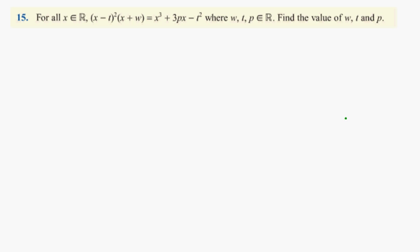There's a problem with multiplying it out. This one here is squared, isn't it? So it's technically x minus t, x minus t, and x plus w.